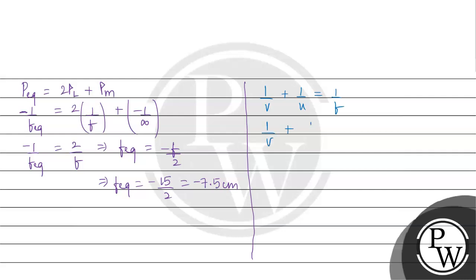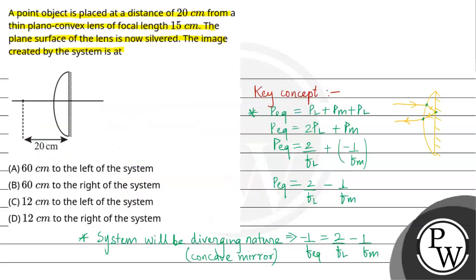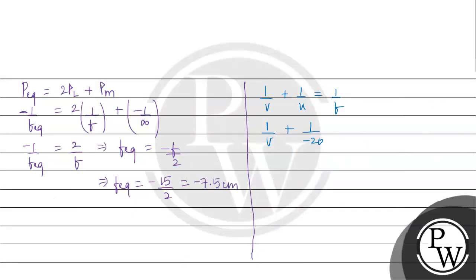To 1 by V, U hoga kitne distance pe rakha gaya tha, minus 20 cm, left side, jisliye minus 1 by 20. Aur 1 by F, jo pura system ka nikal gaya, that is minus 7.5. To 1 by V, minus 7.5 ko aapne likh sakte ho 2 by 15, aur ye plus hoga 1 by 20. 15 aur 20 ka LCM is 60.